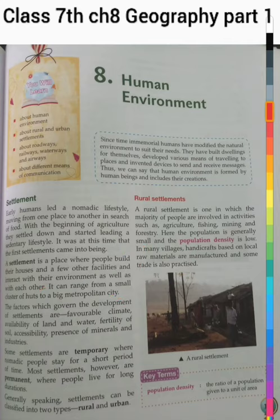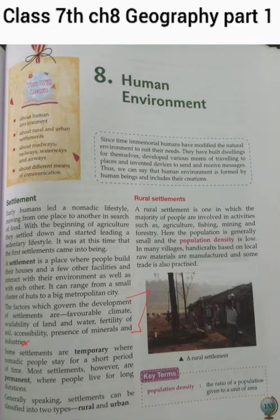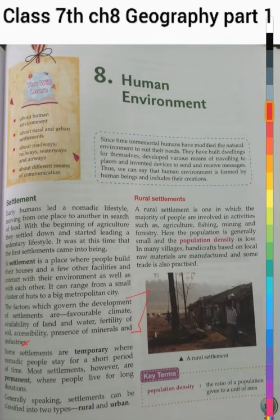The factors which govern the development of settlements are favourable climate, availability of land and water, fertility of soil, accessibility, and presence of minerals and industries. Climate should be favourable for a good settlement to develop. We need availability of land and water where we are building our homes. The soil should be fertile, and the presence of minerals and industries also matters. These are the factors responsible for the development of settlements.